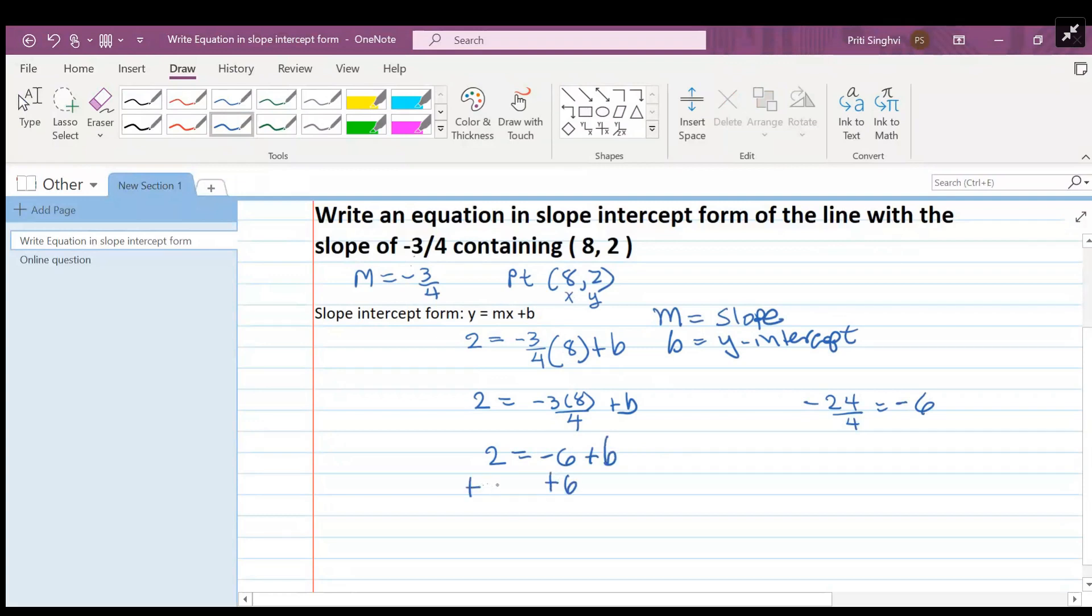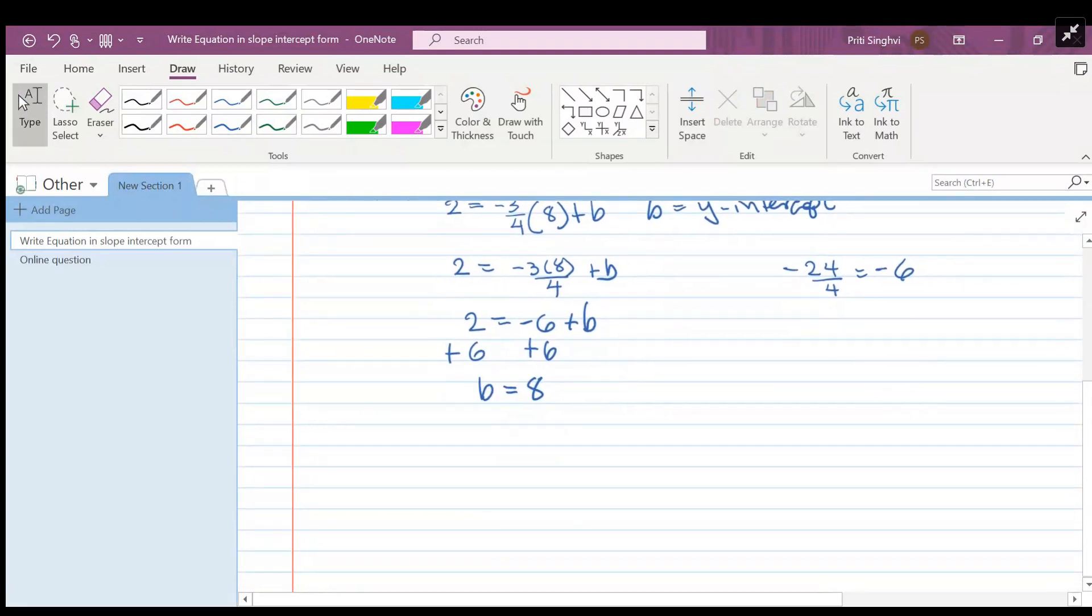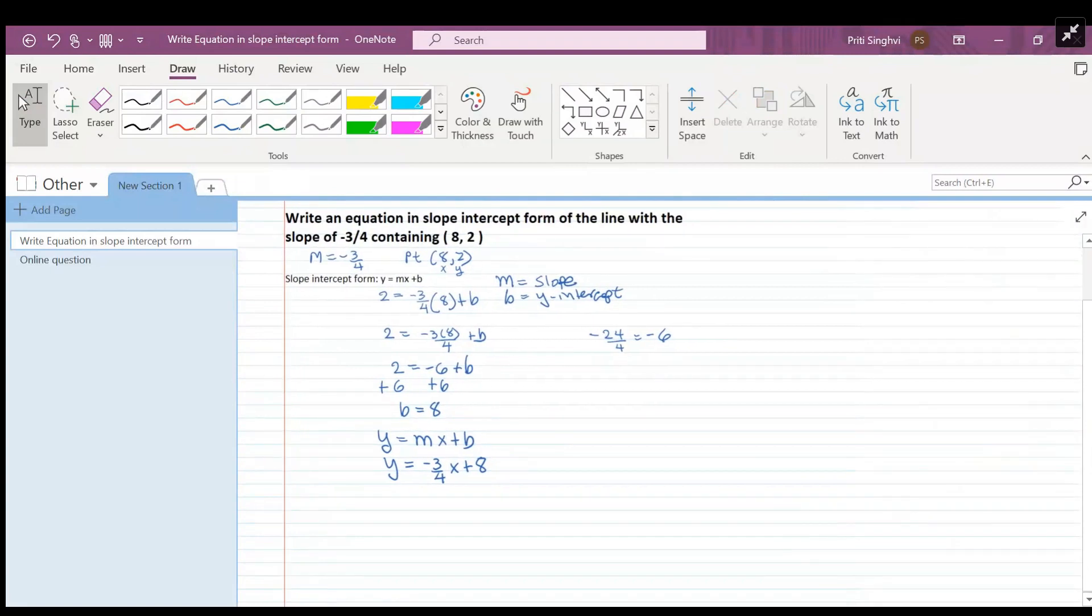Now we can rewrite the equation as y equals mx plus b, or y equals negative three-fourths x plus eight. And we are done writing an equation in slope-intercept form.